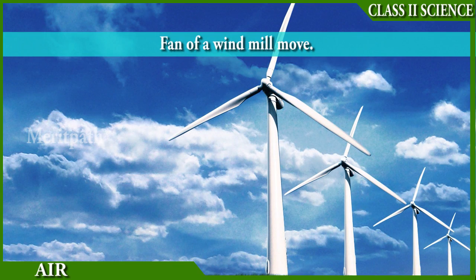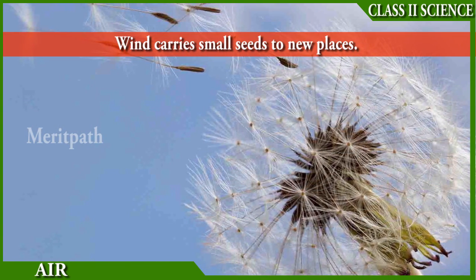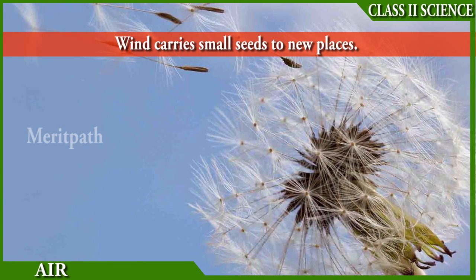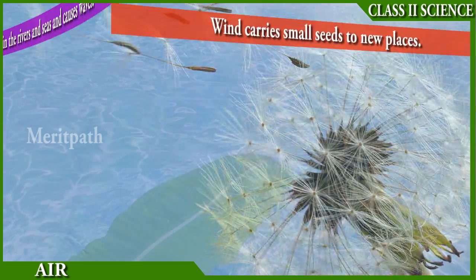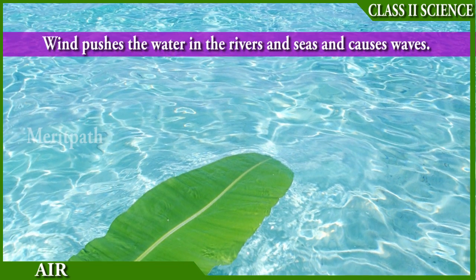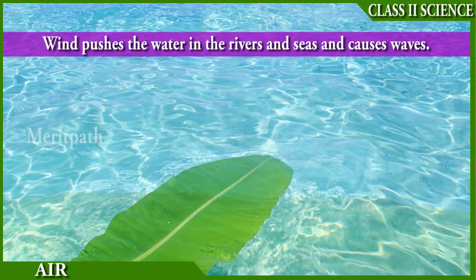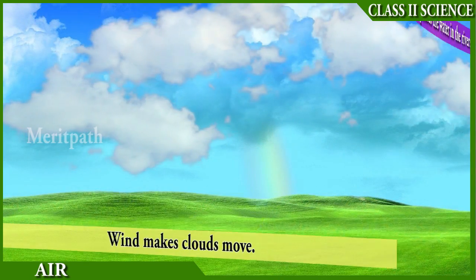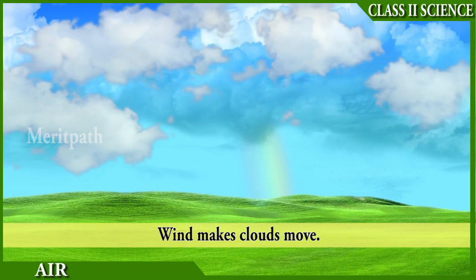Let us learn how wind causes things to move. Wind helps to move the sailboat. It helps to move the fan of the windmill. Wind carries small seeds from place to place. Wind causes waves in the rivers and seas. It also makes the clouds move.